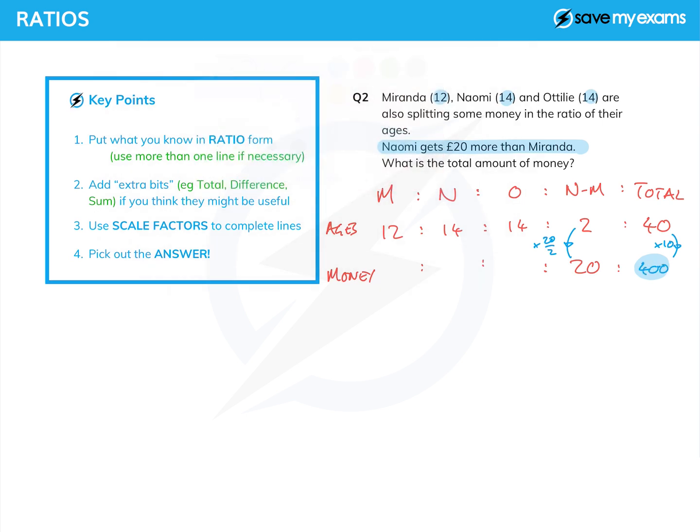We haven't had to work out the amount of money that each girl gets—we could do, but we don't need to. Not 200, but £400. So laying things out clearly really helps.